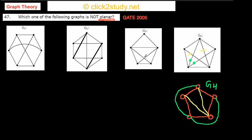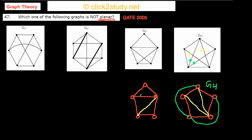Now we come to G3, which is pretty simple. I redraw the vertices and complete the outer cycle. Inside the cycle I have two more edges. I draw one edge as-is, and the other edge that would cross through the inside I instead draw from the outside. So G3 is also planar — this is fine too.